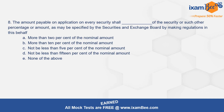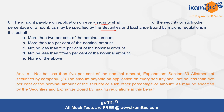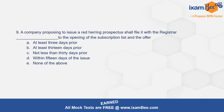Question number eight: the amount payable on application on every security shall [blank] of the security, or such other percentage or amount as SEBI by regulation may specify. The correct option is C — not be less than five percent of the nominal amount of the security. Section 39, which talks about allotment of securities by the company, has an important condition that the amount payable on application for every security shall not be less than five percent of the nominal amount of the security.